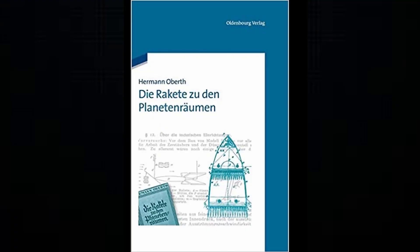In 1923, he wrote a 92-page work called Die Rakete zu den Planetenraumen, The Rocket into Planetary Space.